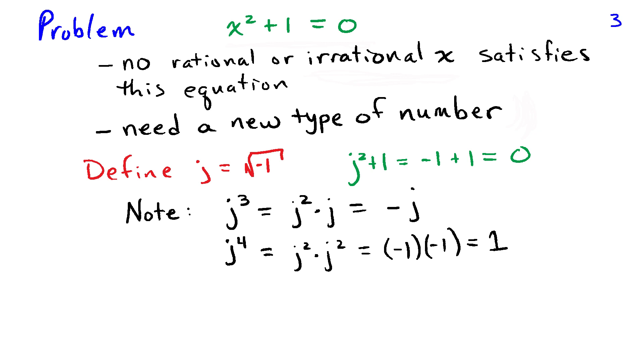That's where we're going to define something called j, which is the square root of minus 1. If you have a math background, you're going to be used to seeing this being represented by the symbol i. But in electrical engineering, we tend to use a symbol j. So j is the square root of negative 1.